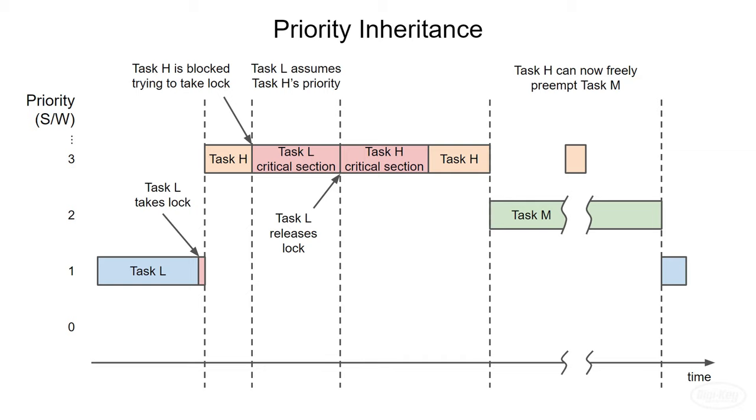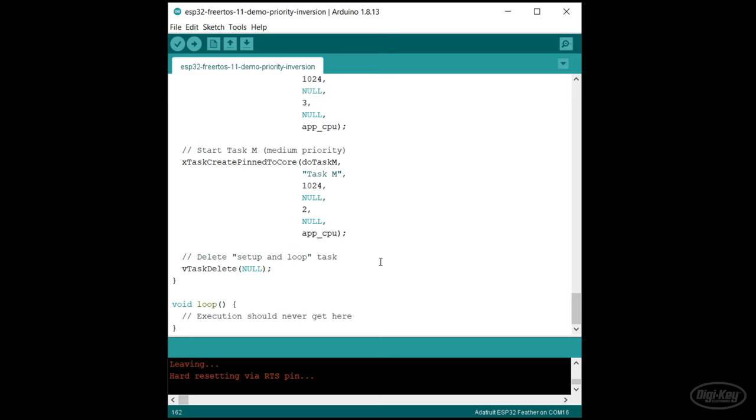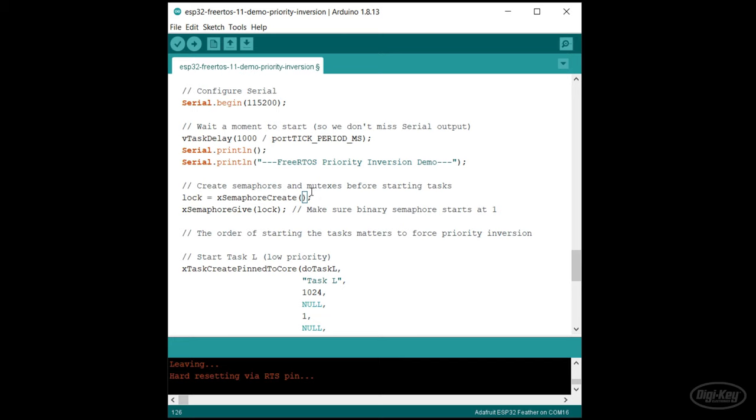Let's see it in action. All I need to do is change the binary semaphore to a mutex and remove the x-semaphore give line as the mutex starts at 1. Let's upload this to the ESP32.